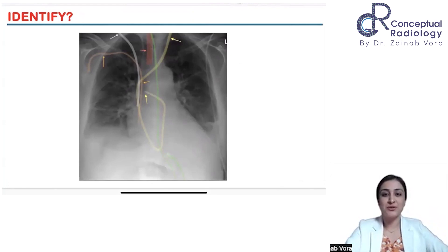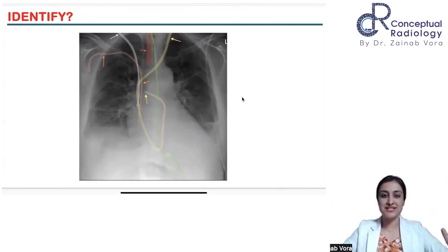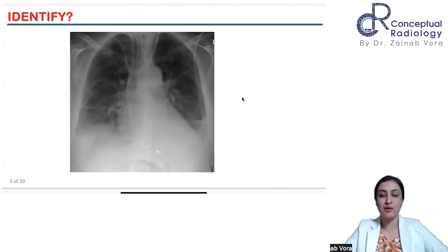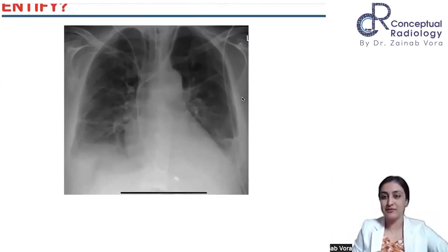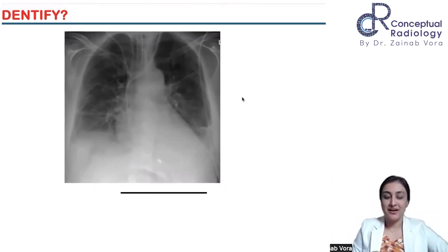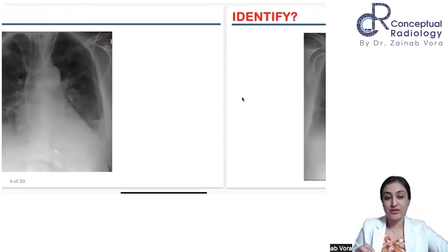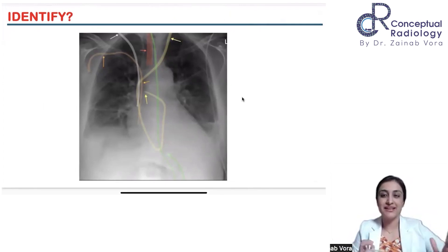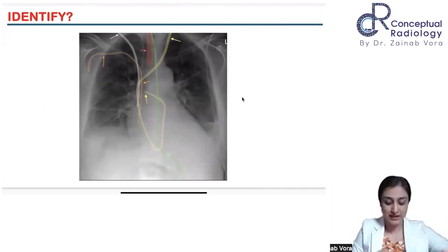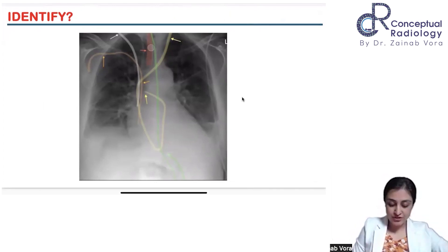Life would be a lot simpler if X-rays came color-coded — it would have been so easy! But they come as black and white. So let's first discuss the color-coded version for ease, and then we'll look at many such X-rays with multiple lines.